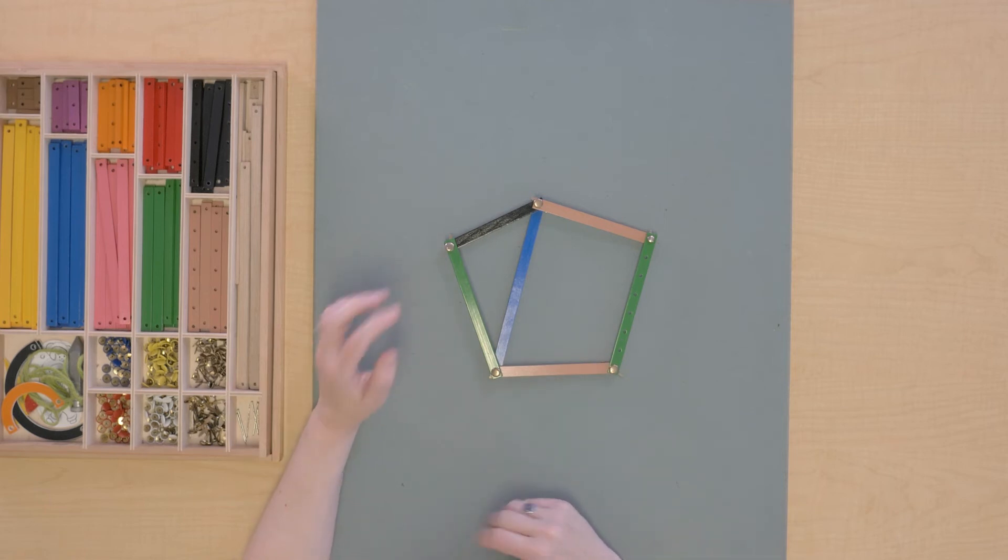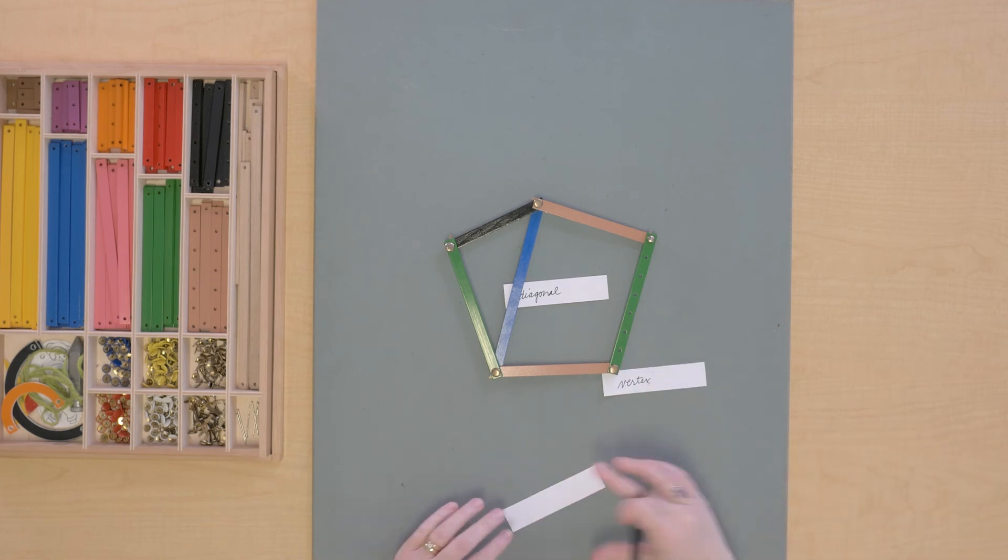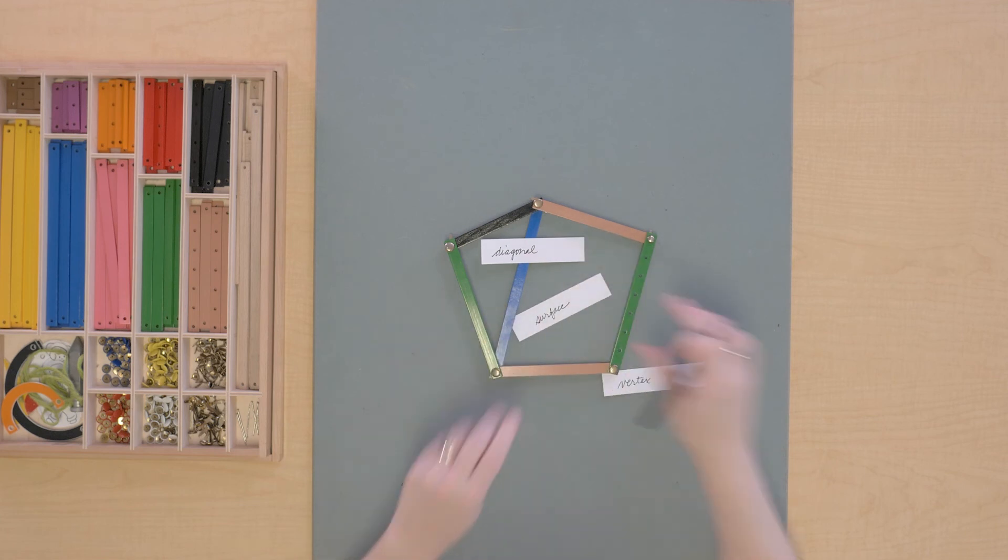Who could label the diagonal? Let's label that. Who could make a label for a vertex? Who could make a label for the surface? Where are we going to put that? Let's see, we'll put that there, put the surface here.